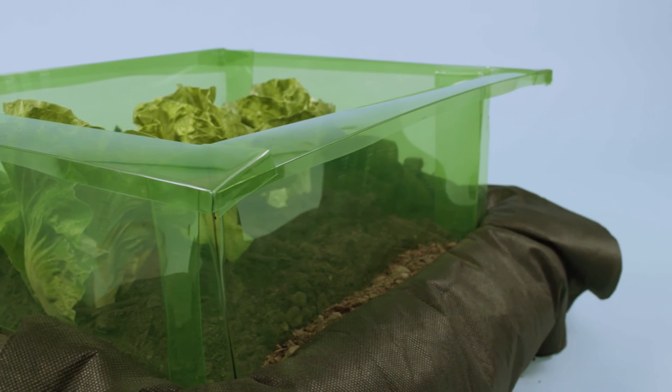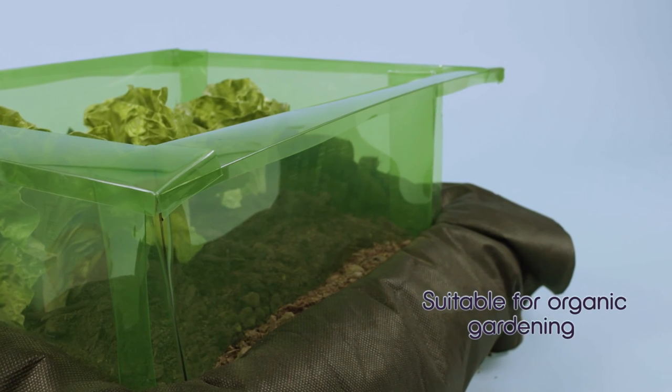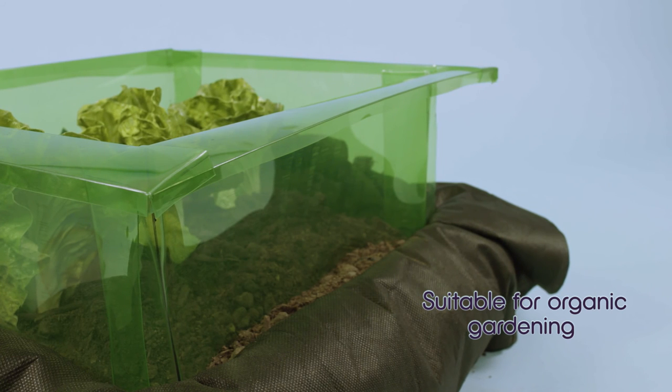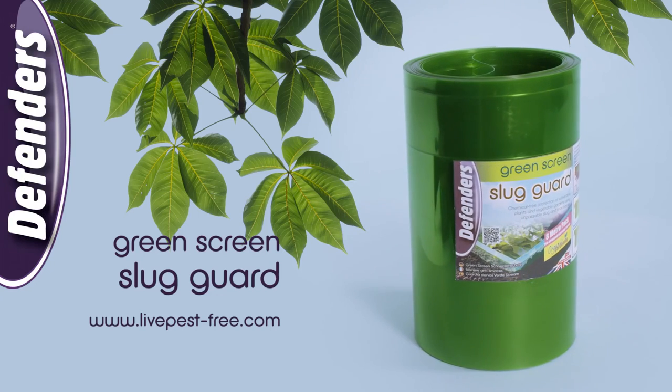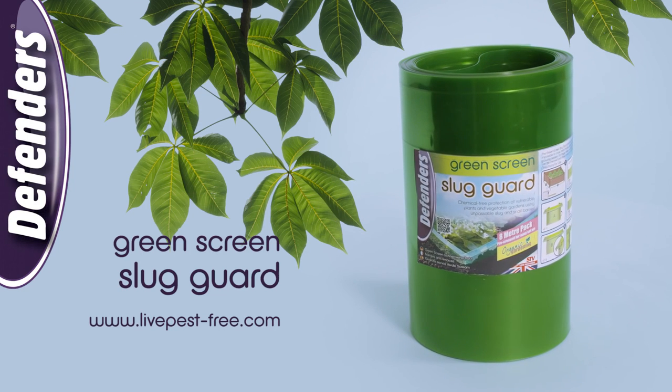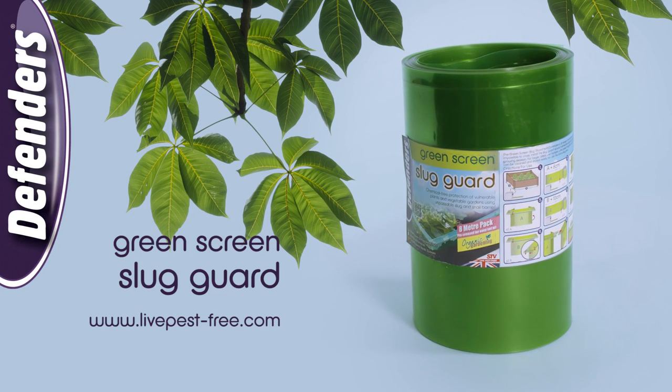Once in place around plants or vegetables, the green screen slug guard forms a barrier that slugs and snails cannot cross. The green screen slug guard - the natural defense against slugs and snails.